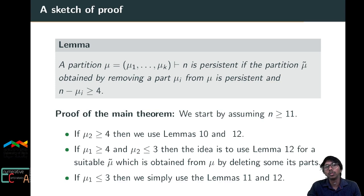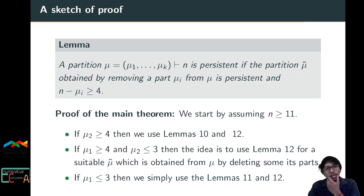The proof of the main theorem proceeds as follows. We assume μ has at least three parts, since the two-part case is already largely classified. If μ₂ ≥ 4, then μ₁ ≥ 4 as well, and by the earlier lemma (μ₁, μ₂) is persistent with both parts ≥ 4. Applying the reduction lemma repeatedly then shows μ is persistent.